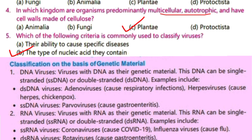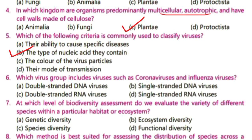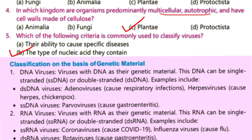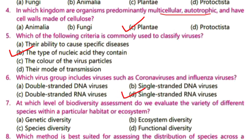On the basis of genetic material, viruses are classified into two main categories — DNA viruses and RNA viruses — and further classified into single-stranded or double-stranded. MCQ number 6: which virus group includes coronaviruses and influenza viruses? They are classified as single-stranded RNA viruses, so D is the right option.